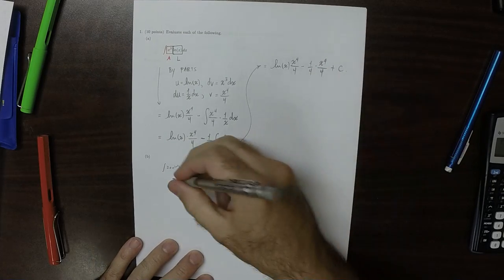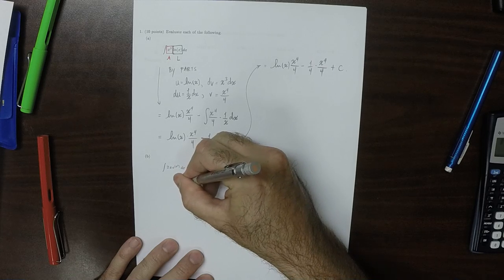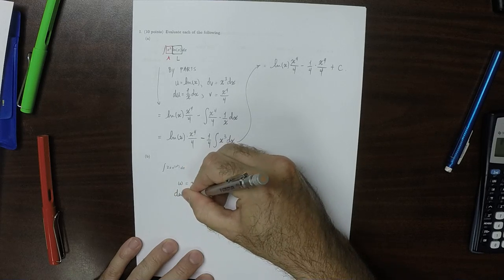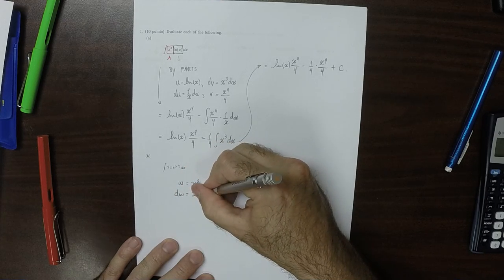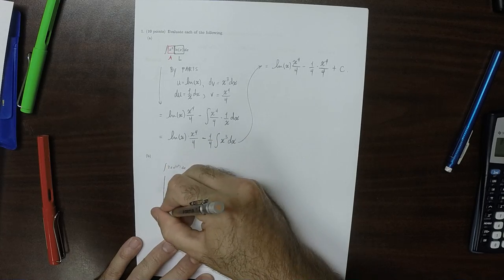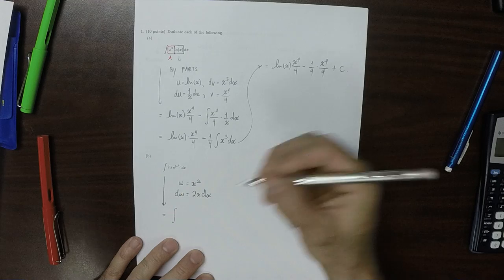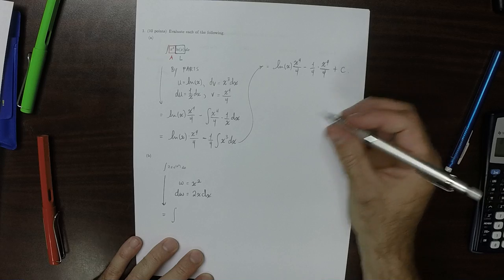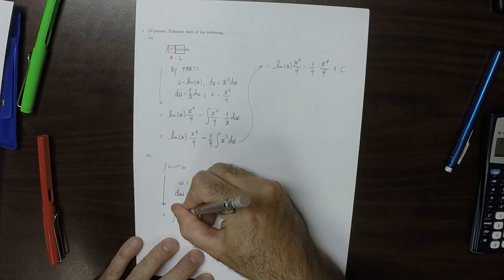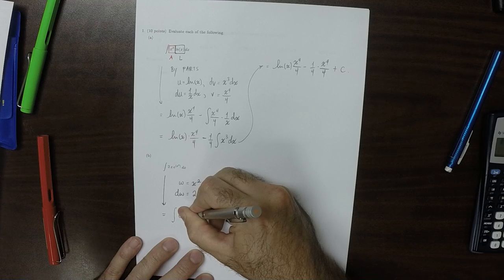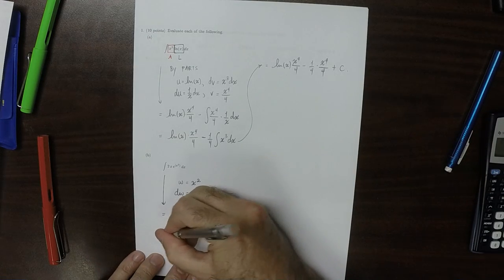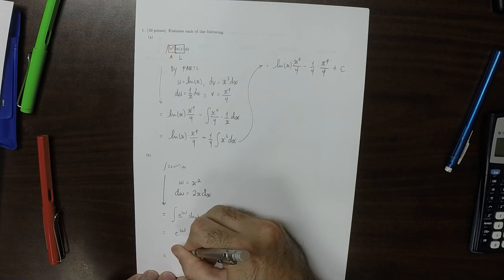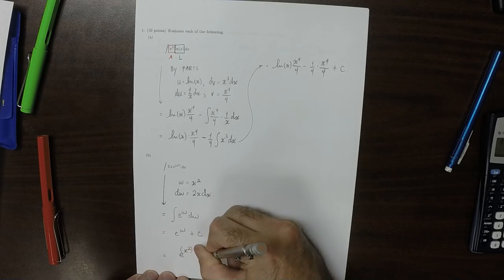The antiderivative in part b can be done with just a substitution. So how about w is x squared, dw is 2x dx. So as a result of that change of variables, the resulting antiderivative is the antiderivative of e to the w dw, which is of course e to the w plus a constant. So e to the x squared plus a constant.